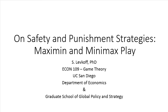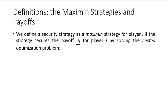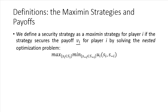Let's get right to it by defining the first concept, which is the Maximin strategy and payoff. We're going to define a security strategy as a Maximin strategy for player I, if the strategy is able to secure the payoff of the I lower bar for that player. We achieve this payoff by solving the following nested optimization problem. We first consider the inside optimization problem, where the opposition is trying to minimize player I's payoff by choosing a strategy from their strategy space. Given that behavior, player I solves the outside maximization problem, and the value of the resulting objective function is going to be the Maximin payoff for player I, which we call the I lower bar.